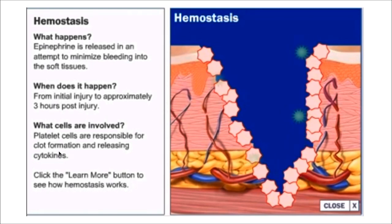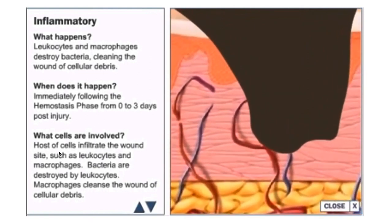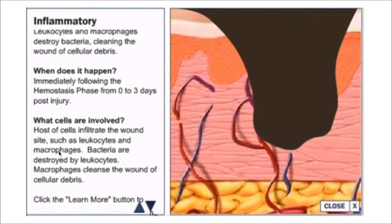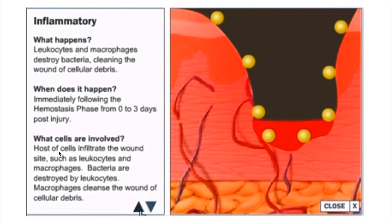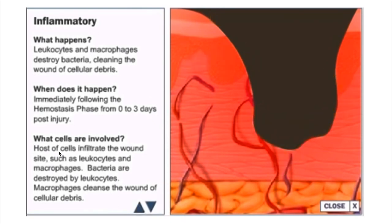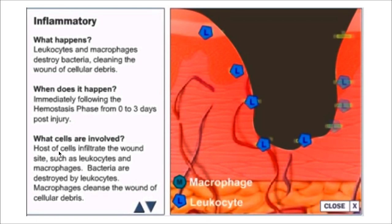Following hemostasis, the inflammatory phase begins. Local signs and symptoms include swelling, increased fluid, perfusion of blood, wetness, release of epinephrine, histamine, heat, and pain. This phase is characterized by leukocytes and macrophages infiltrating the wound site. Leukocytes — particularly polymorphonuclear neutrophils — destroy any bacteria present. About 4 days after injury, macrophages destroy bacteria and cleanse the wound of cellular debris, replacing leukocytes and releasing cytokines and growth factors.